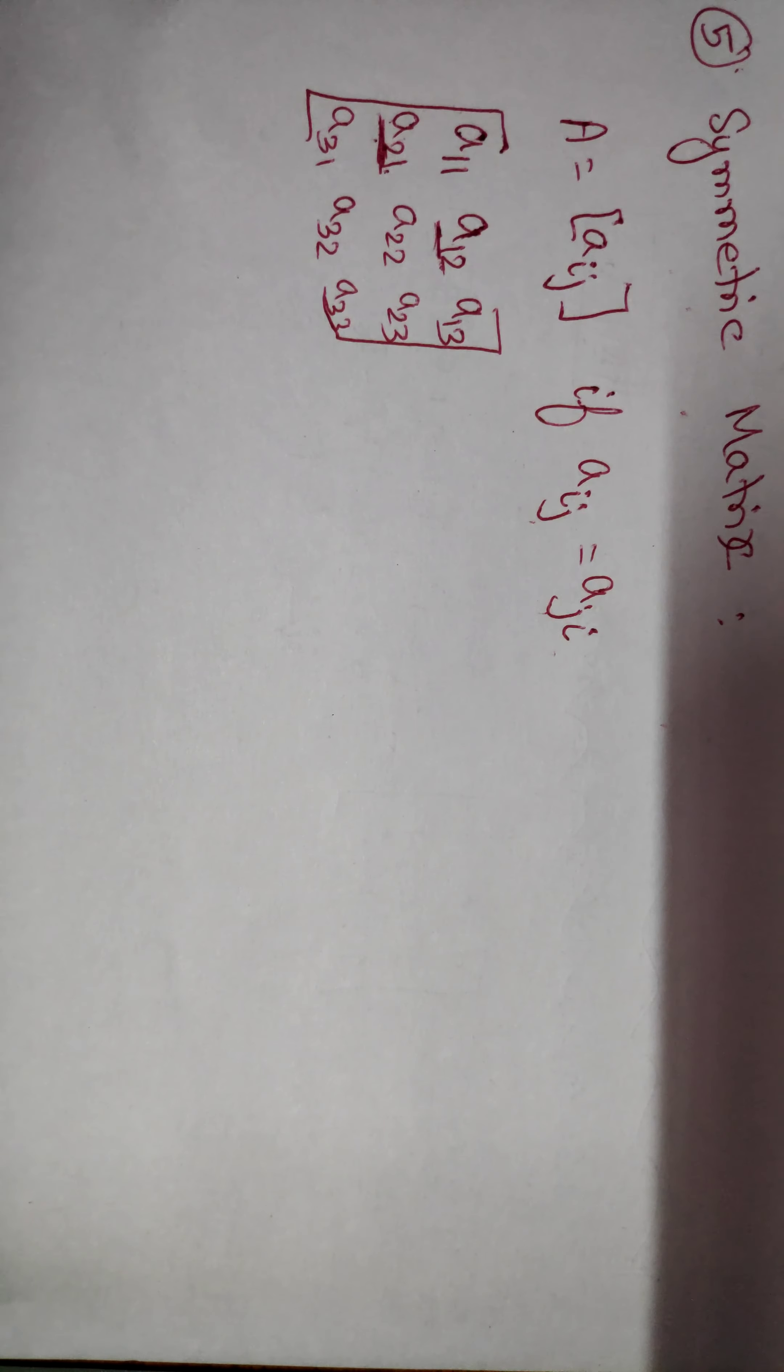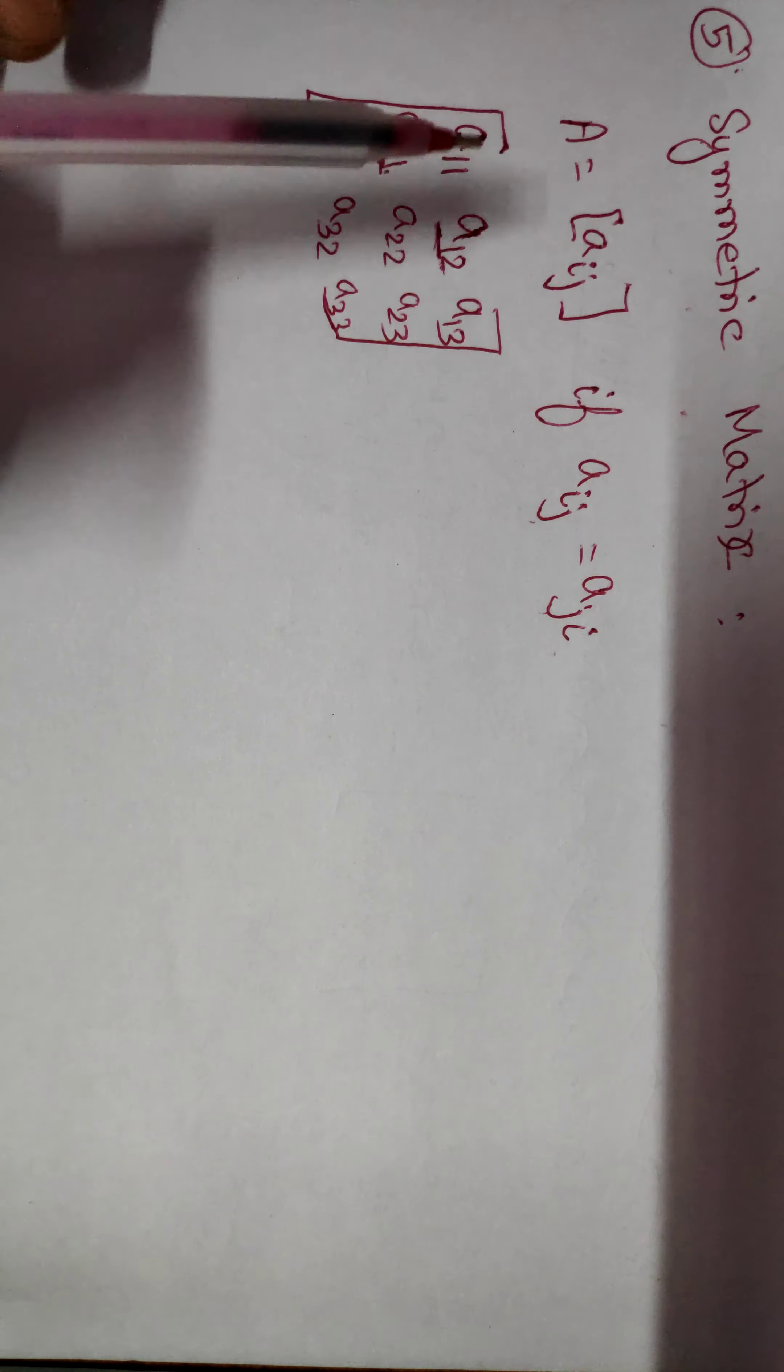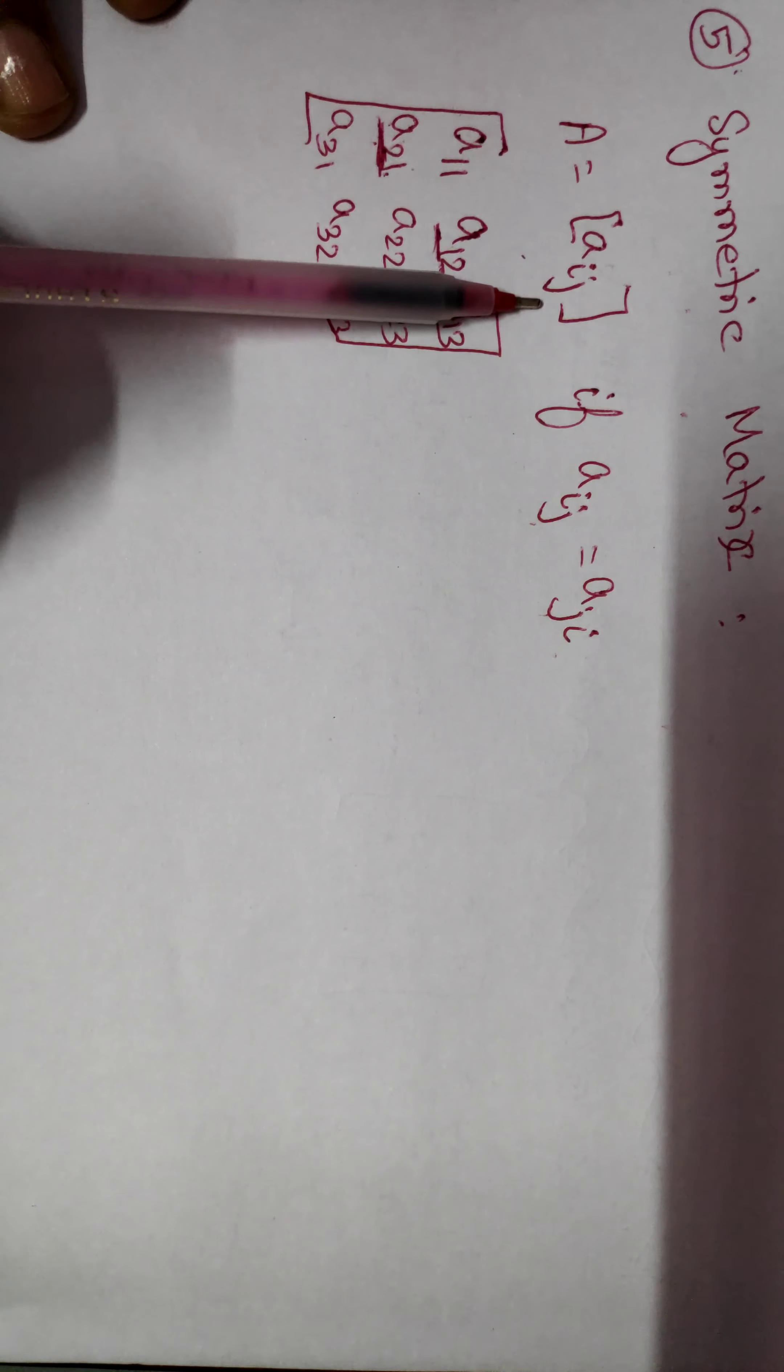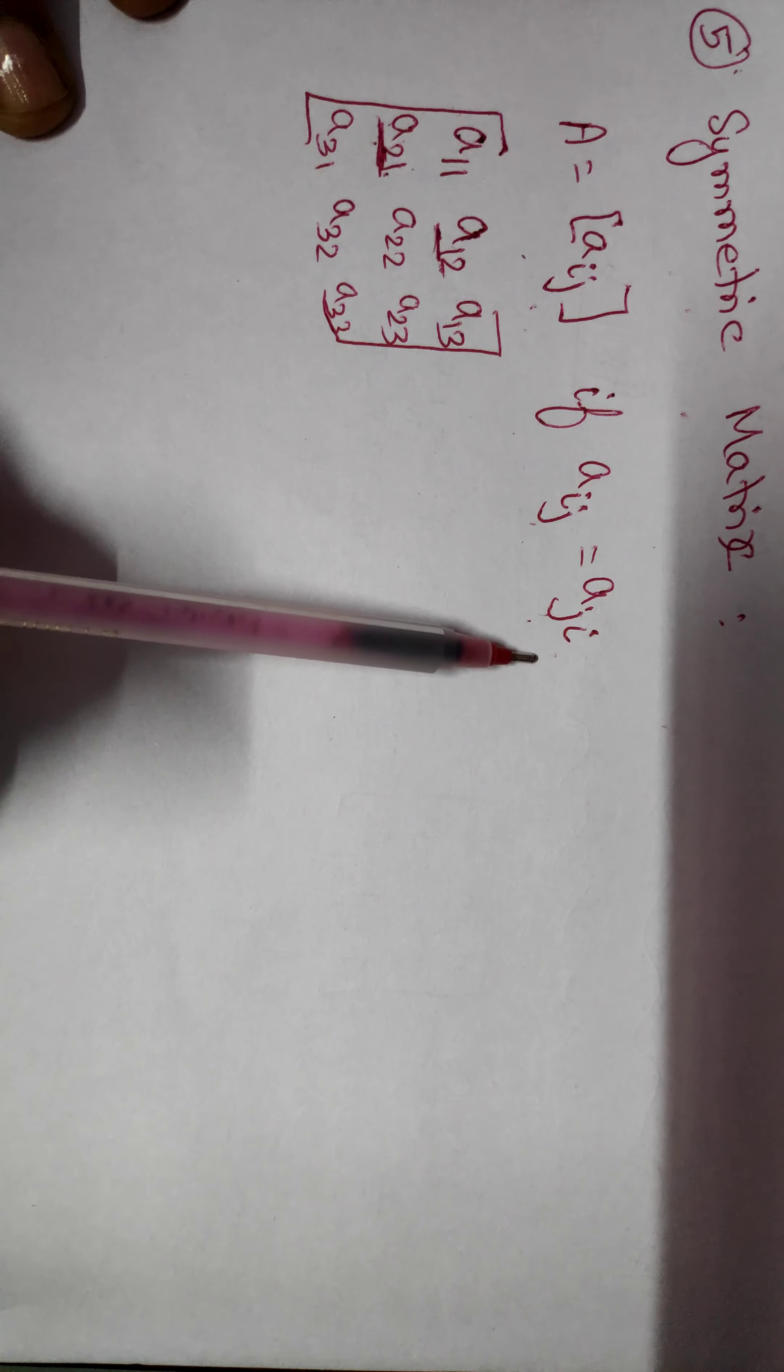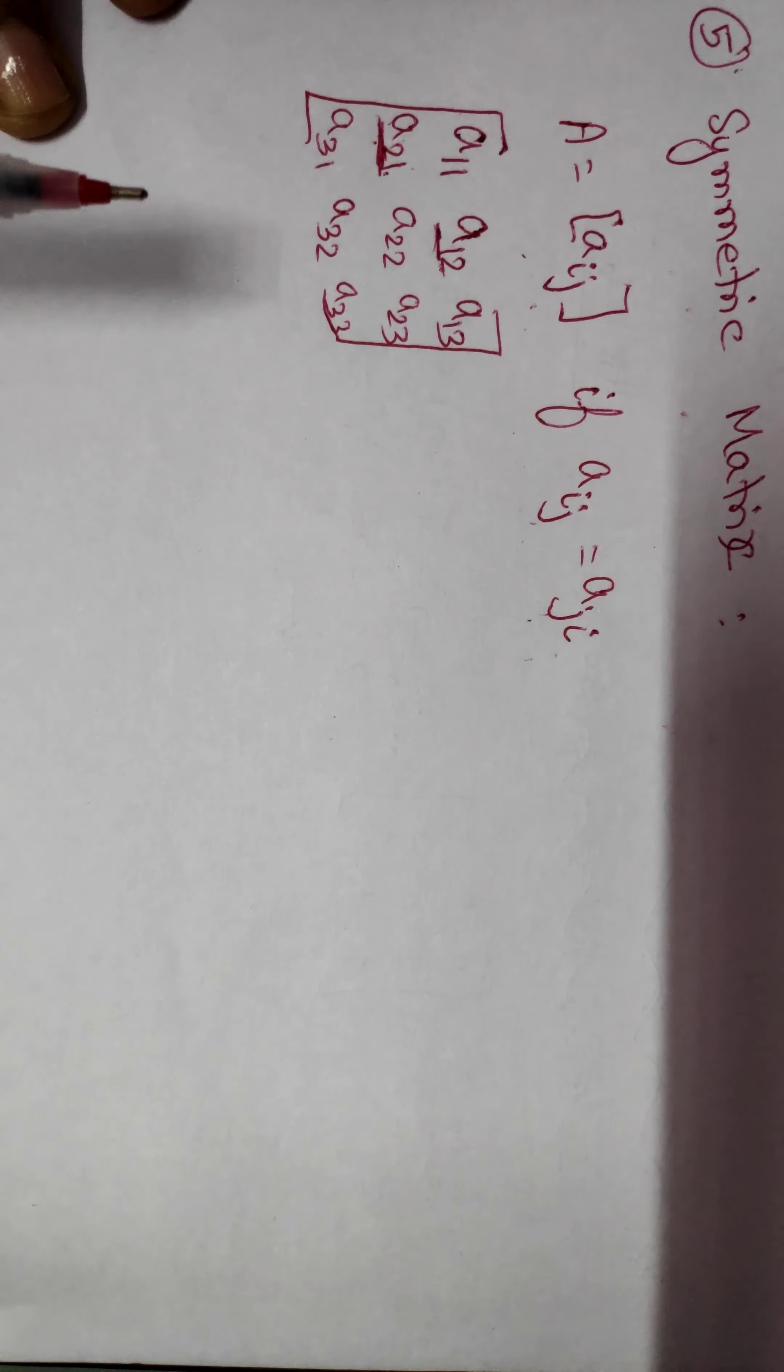Hi, in this lecture we are going to see what is a symmetric matrix. A equals Aij is our given matrix. If Aij equals Aji, then it is called a symmetric matrix.